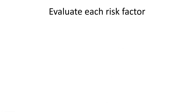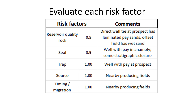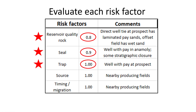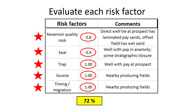Each risk factor is evaluated by the technical team working the prospect. Here's a sample matrix documenting our findings: reservoir rock quality is 80% chance of good rock at the location; the seal has a high probability; the trap is well-supported because we have a down-dip well with pay in it; the source is given 100% because we have a nearby field; and migration and timing is also 100%. These numbers range from zero to one hundred, and you multiply them all together to get the overall chance of success.